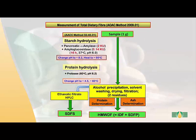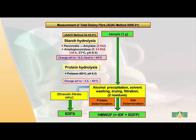This method was successfully evaluated in AOAC and AACC interlaboratory evaluation to become AOAC method 2009.01 and 2011.25. It's also accepted as a Codex Type 1 method. This procedure outlines starch hydrolysis with pancreatic alpha-amylase and amyloglucosidase for 16 hours at 37 degrees centigrade, pH 6, followed by change of pH, then protein hydrolysis, and eventually measurement of low molecular weight dietary fiber and high molecular weight dietary fiber.